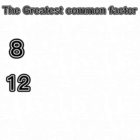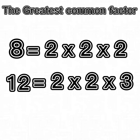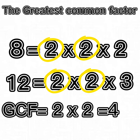Let's find the greatest common factor for 12 and 8. 8 is equal to 2 times 2 times 2. Using the factor tree we can see that 12 is equal to 2 times 2 times 3. The greatest common factor is the product of the numbers in common. In this case we have two 2's in both numbers, so the greatest common factor, also known as GCF, is 2 times 2, or 4.